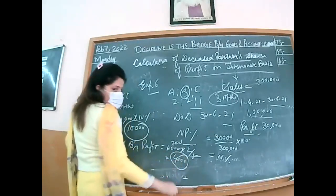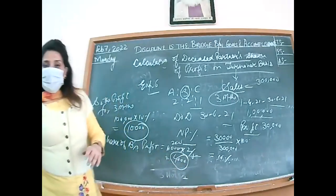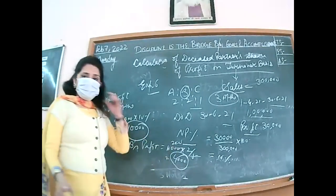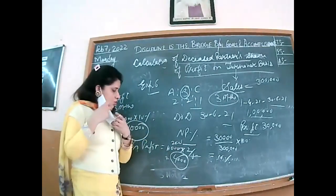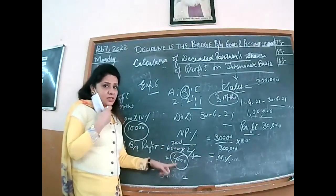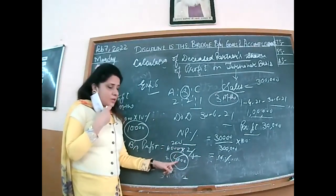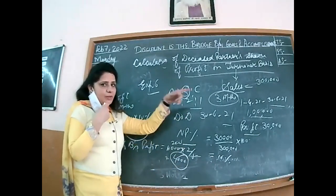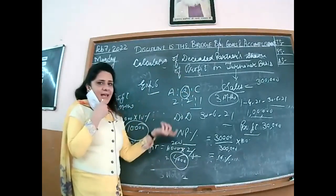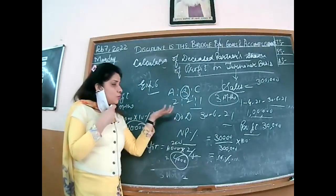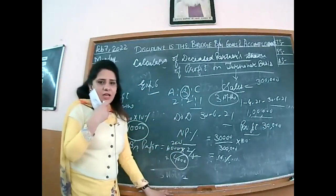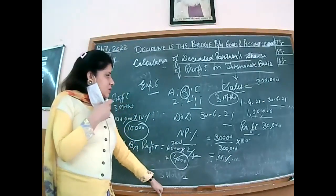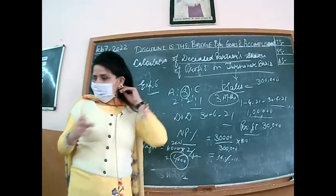This question can be asked in 2 parts — calculation of profit to be paid to the deceased partner, and journal entry. For the journal entry: since we are estimating, we pass P&L Suspense Account debited to B's Capital Account. We will first transfer everything to his capital account. From his capital account, we calculate the amount to be paid to his executor. We make the capital account as usual, and the balancing figure is transferred to his executor's account.